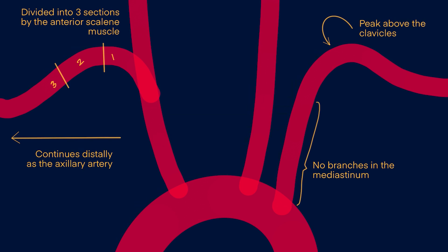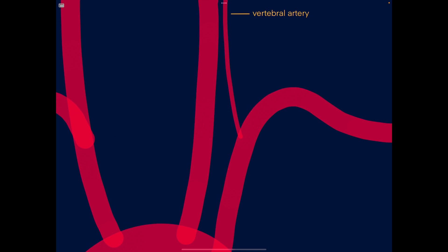Now let's take a look at the branches of the subclavian artery. The first and largest branch is the vertebral artery. On the left, this can occasionally come from the aortic arch or from an early branch point of the subclavian artery, but usually it arises just after the subclavian artery exits the thorax.